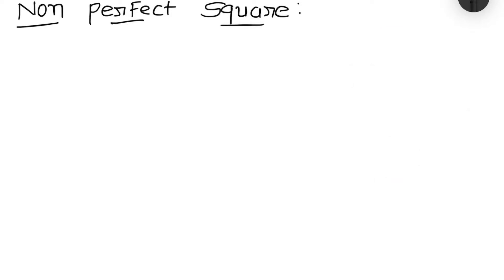Let us discuss non-perfect square numbers. How to define non-perfect square? I have two simple methods to define. First method: if number end with 2, 3, 7, or 8, then it is non-perfect square number.